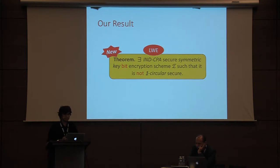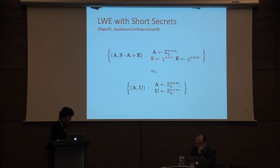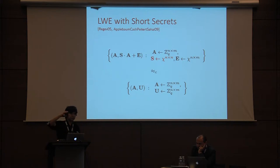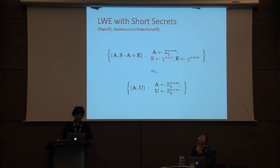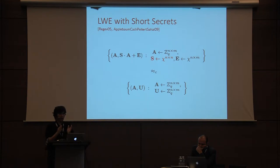The assumption is learning with errors (LWE). LWE simply says that if you are given a random matrix A and some noisy linear combinations of the rows of matrix A, you should not be able to distinguish that from the random matrix A and some other uniform matrix U. We will be using the short secrets version of LWE, which says that the secret matrix S — which tells you how to linearly combine the rows of matrix A — should also be a low-norm random matrix.